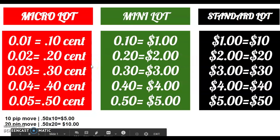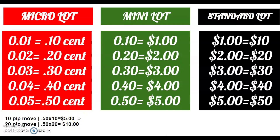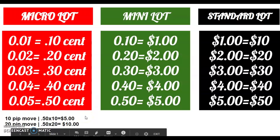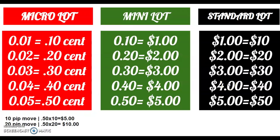This is how you understand the market. When you do a 10-pip move on these micro lots, say your lot size is 0.50 — 0.50 times 10 because you did a 10-pip move brings you to $5. That's what you've made. Some of y'all want to get rich so quick with that $5, and then you're going to mess around and get brought to your knees playing around on standards.